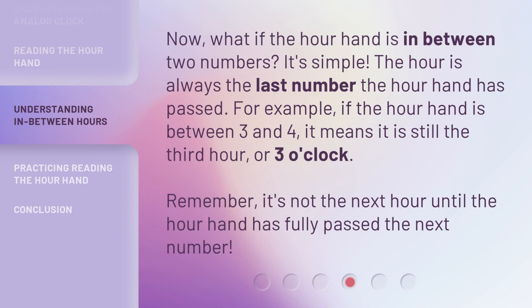Now, what if the hour hand is in between two numbers? It's simple — the hour is always the last number the hour hand has passed. For example, if the hour hand is between 3 and 4, it means it is still the third hour, or 3 o'clock. Remember, it's not the next hour until the hour hand has fully passed the next number.